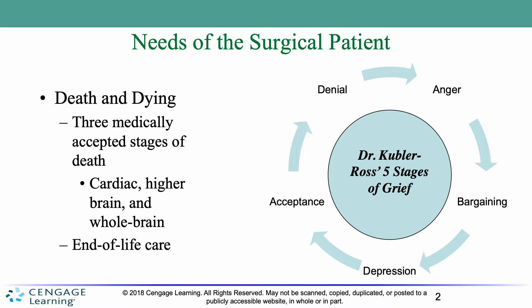Moving on to the fourth stage, which Dr. Kubler-Ross said is depression. That's where anger is replaced by a sense of loss, and a person might say, 'Please don't take me away from my family.' And then lastly, hopefully, the individual enters into the acceptance stage of grief, where they finally accept the situation and might say something like, 'I know I will be in a better place.'